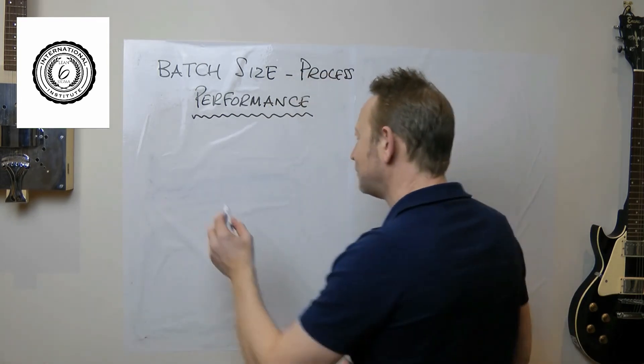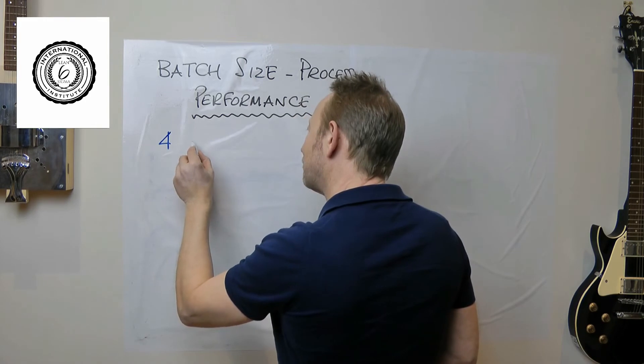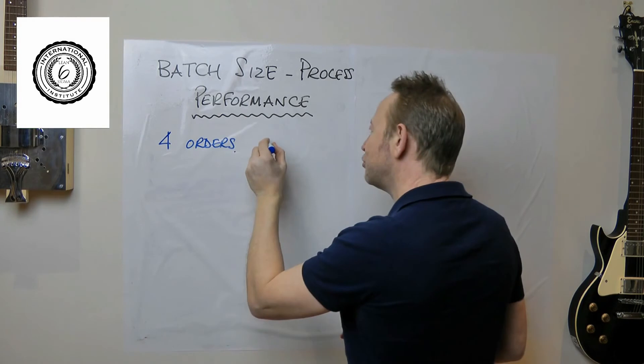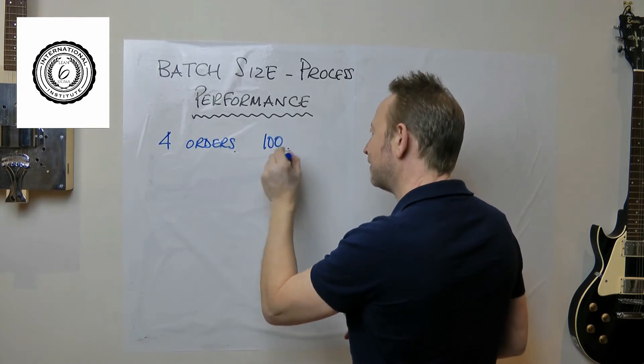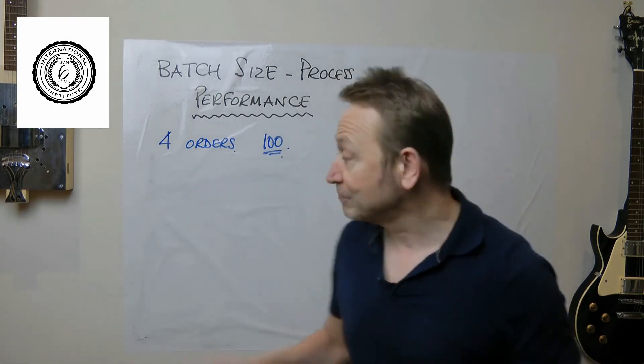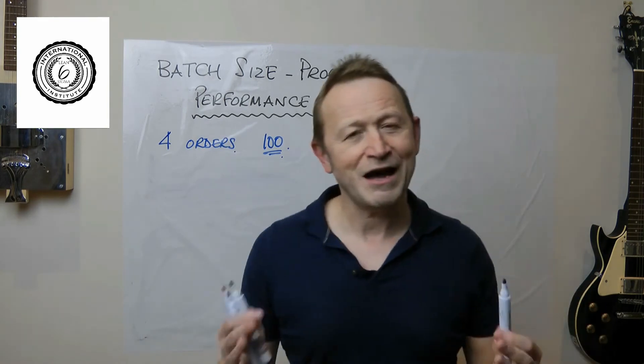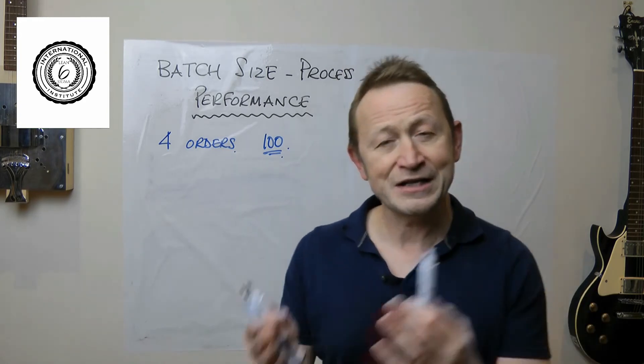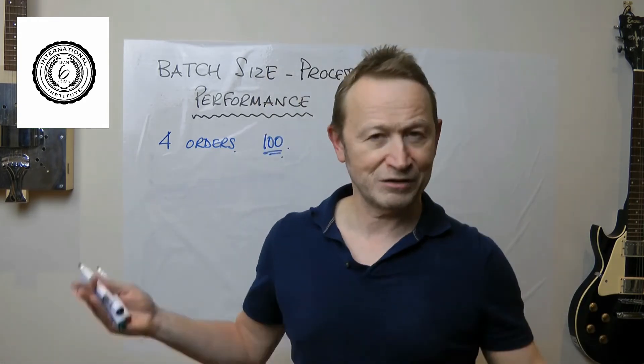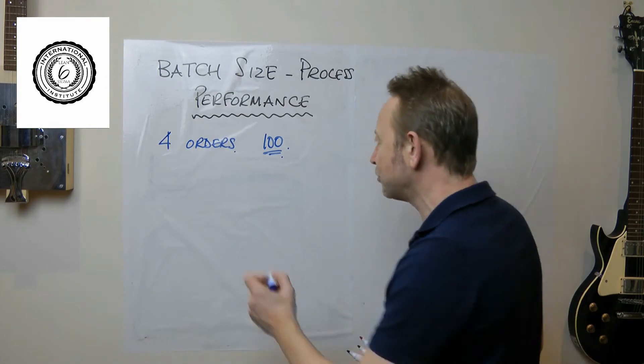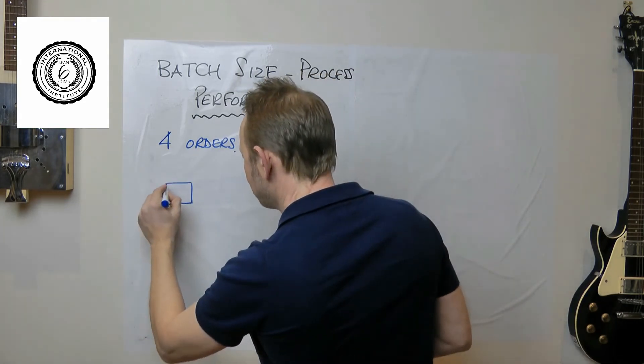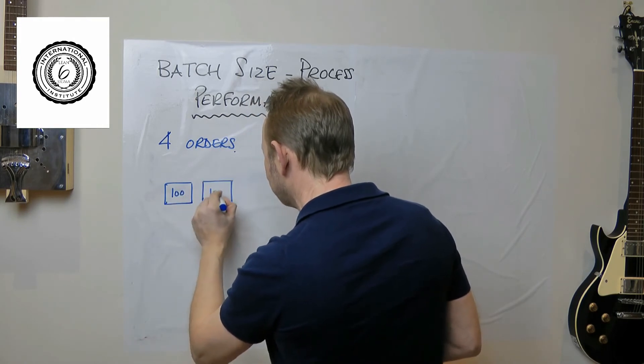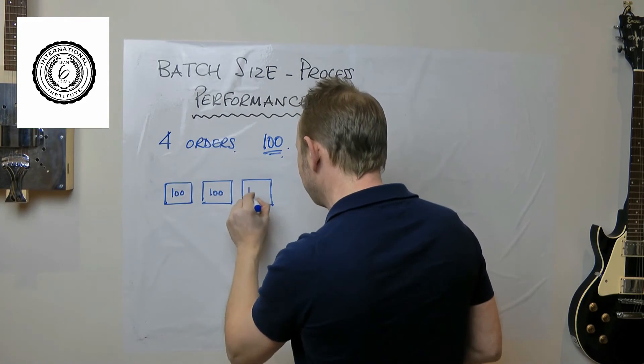So let's set up a little scenario and we'll talk about what happens when you increase batch sizes. Let's consider the idea that we have four customer orders, and they're all for a hundred. A hundred happens to be the current accepted batch size and it is the batch size that we've put in our computer.